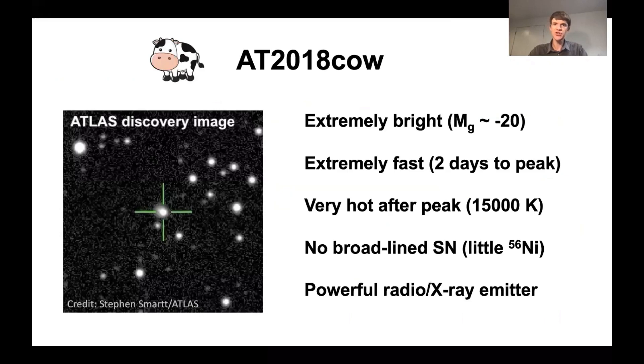The story of this paper starts not with the transient we discovered but with a different transient several years prior called AT2018COW or the cow for short. This transient showed a number of properties that were rare or even unprecedented at the time. It was extremely bright with a maximum magnitude of about negative 20. It was extremely fast both to rise, taking only two days from explosion to reach that peak magnitude, and faded away almost as quickly.